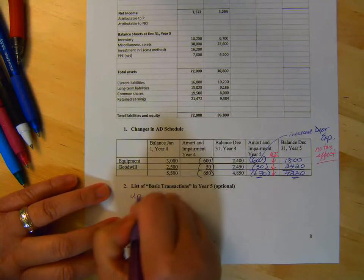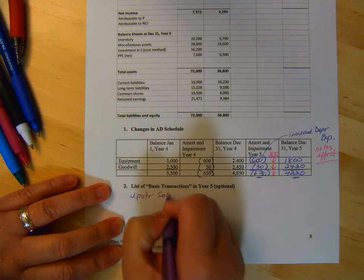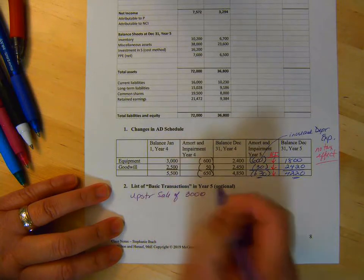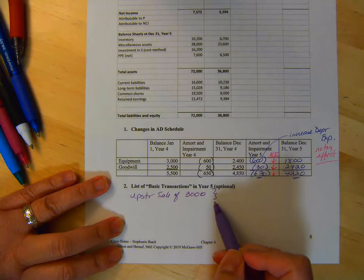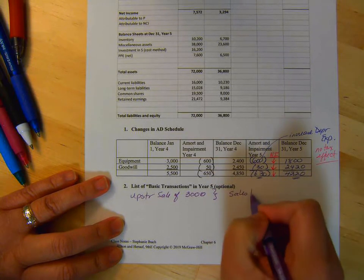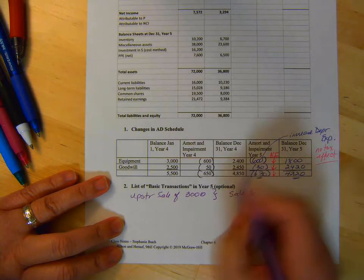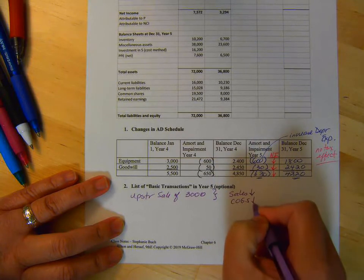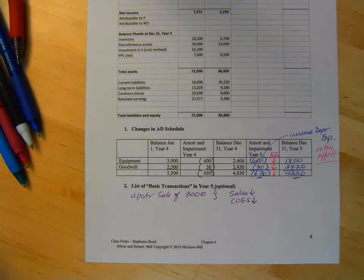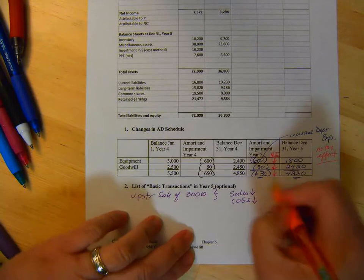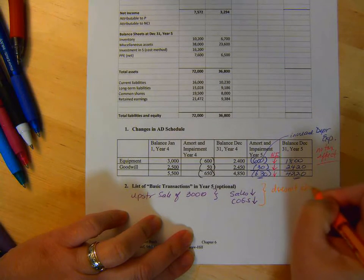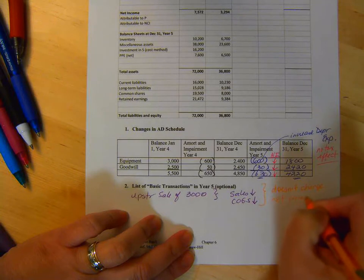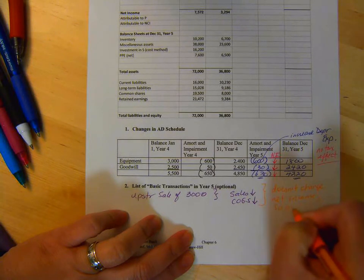Okay, so upstream sale of 3,000. Now what are the accounts that we use for this? We know sales has to go down, but what else? Cost of goods sold has to go down. Is there any tax effect? Does it change net income? Doesn't change net income, so no tax effect.